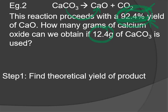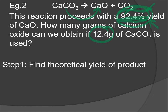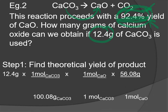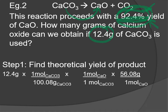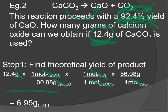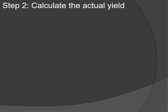The calculation gives the theoretical yield, but we know we'll only ever get 92.4% of that. To find the actual yield, we first need the theoretical yield. Starting with the mass of calcium carbonate, convert to moles, convert from moles of CaCO₃ to moles of CaO using the 1-to-1 ratio, then convert to mass of calcium oxide. This gives us 6.95 grams of calcium oxide — but this is the theoretical yield from the stoichiometry.